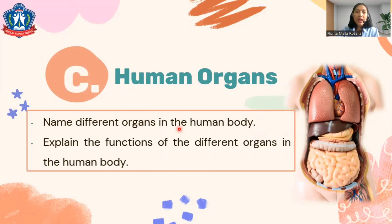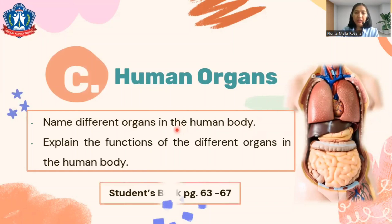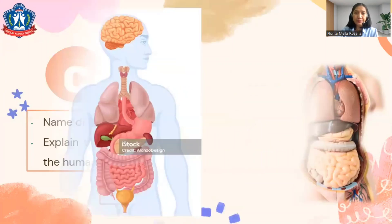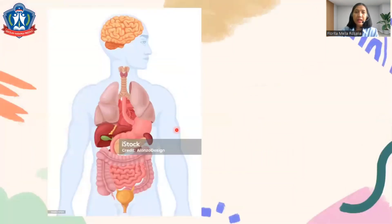Now let's continue about human organs. In this lesson you're going to name different organs in the human body and explain the function of different organs. You can open the student's book page 63 until 67. Take a look at this picture — this is the model of the parts of human organs.